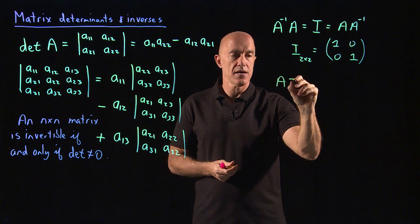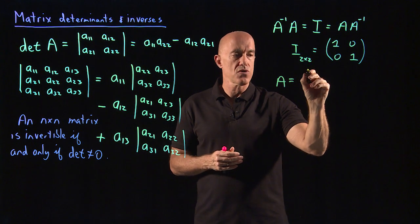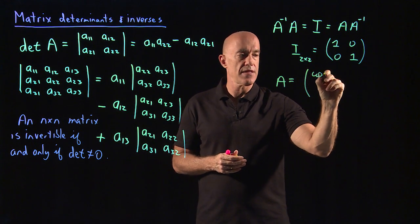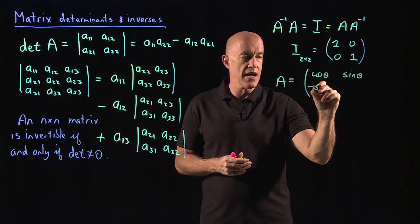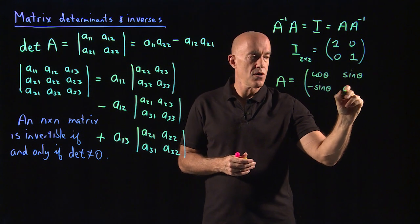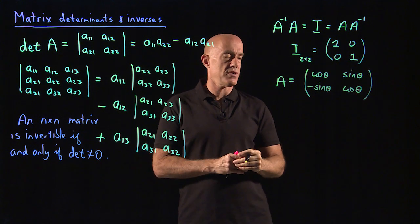So I can give you an example of a matrix. Let's look at a matrix that will be associated with polar coordinates. It's cosine theta, sine theta, minus sine theta, cosine theta. We'll see this matrix when we study polar coordinates.